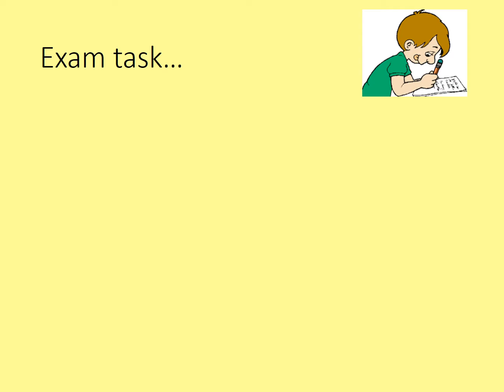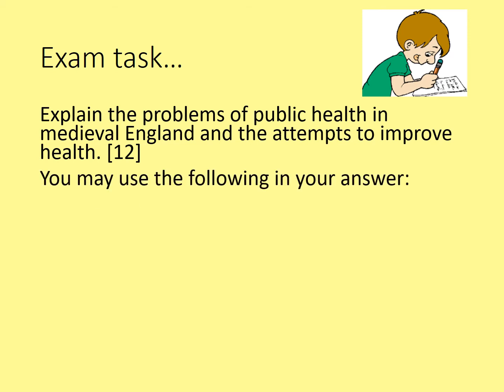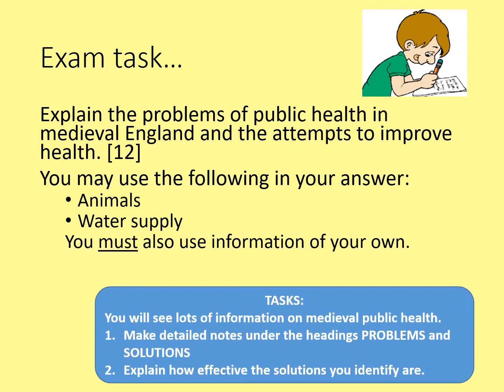At the end of this lesson you're going to be asked to complete an exam question: 'Explain the problems of public health in medieval England and the attempts to improve health.' You may use the following in your answer: animals and water supply. You must also use information of your own. You're going to make detailed notes under the headings of problems and solutions, and explain how effective the solutions you identify are. If you've already done this topic and want to treat this as exam practice, you can attempt to answer the question now. If not, move on, make your notes, and answer it at the end.